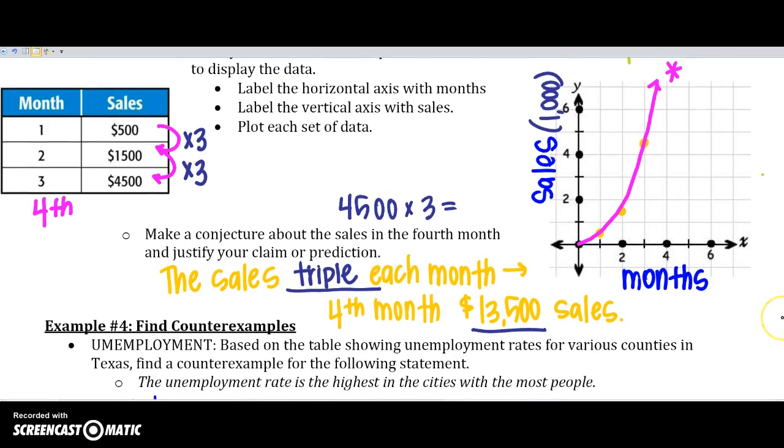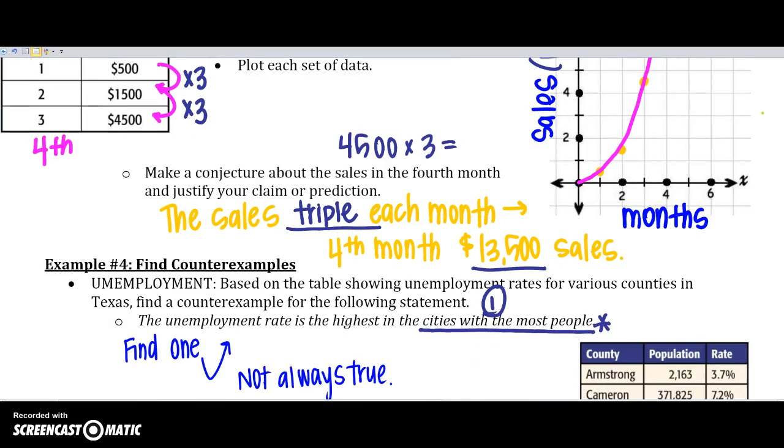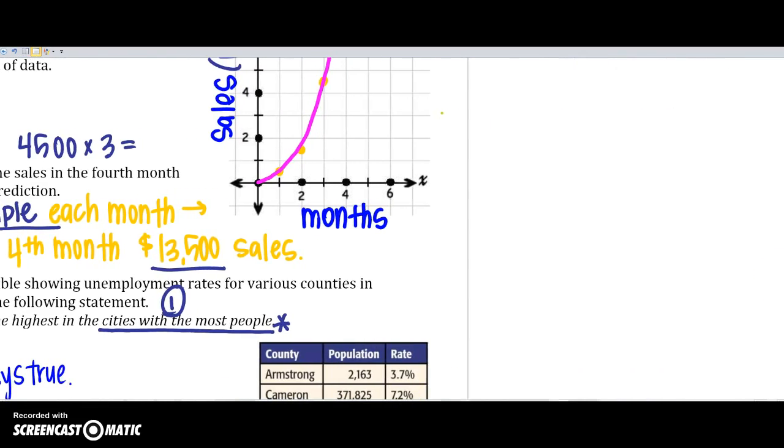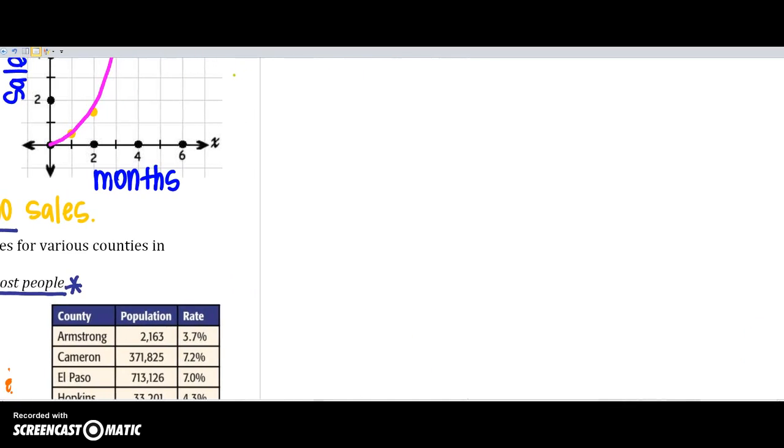And last, based on the table shown, unemployment rates for various counties in Texas, find a counterexample for the statement. The unemployment rate is the highest in cities with the most people. So, remember, counterexample is just one that says that statement is not always true. Sometimes it is, but it isn't. So, we need to find one so that it's not always true. So, let's look at this. Not always true.